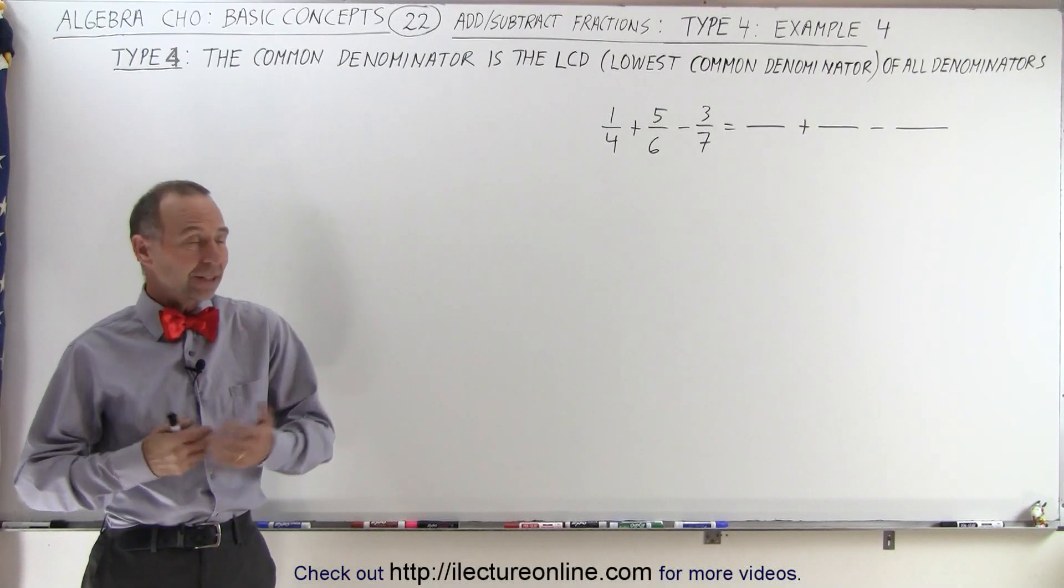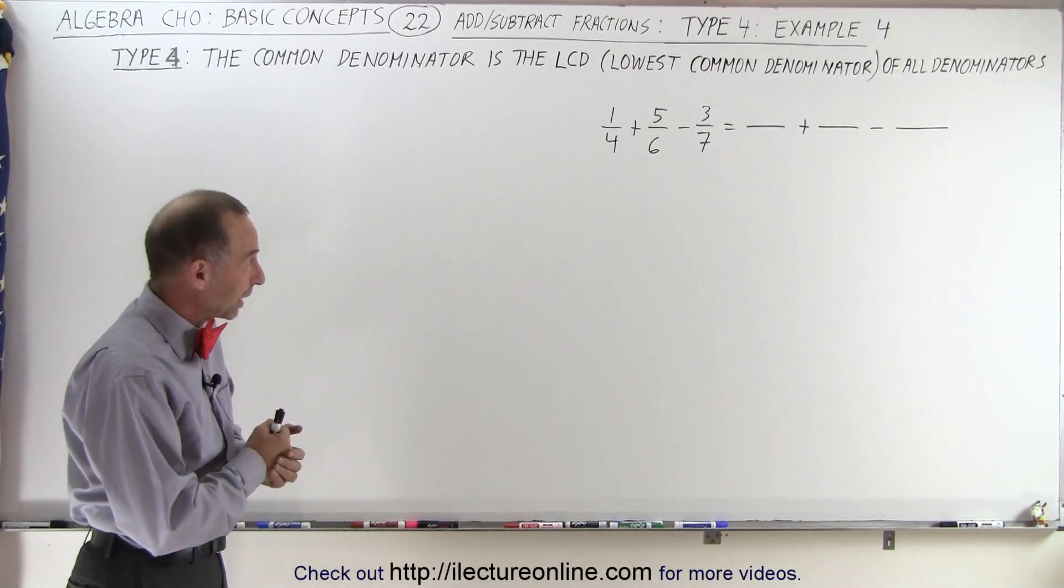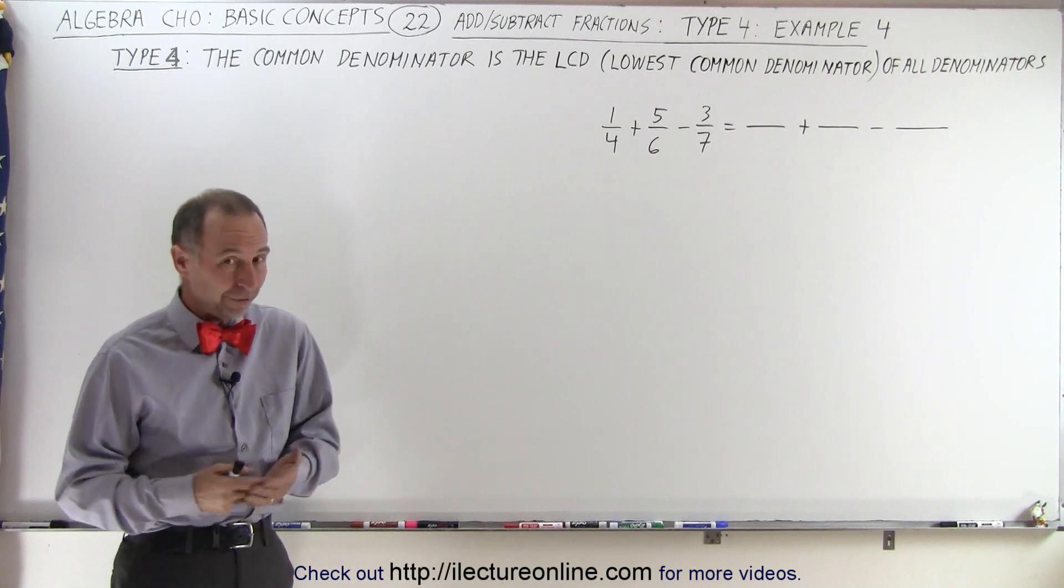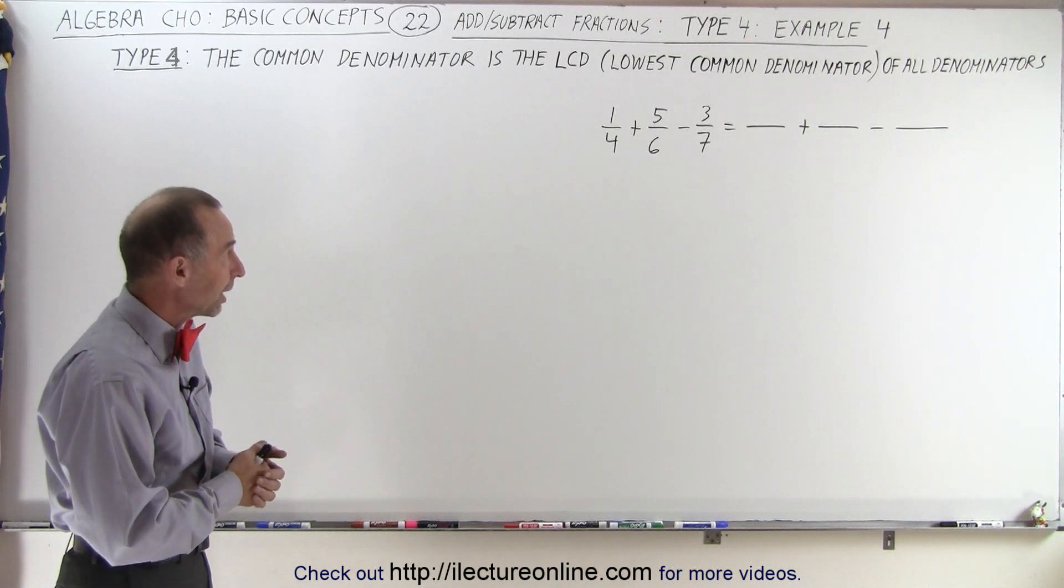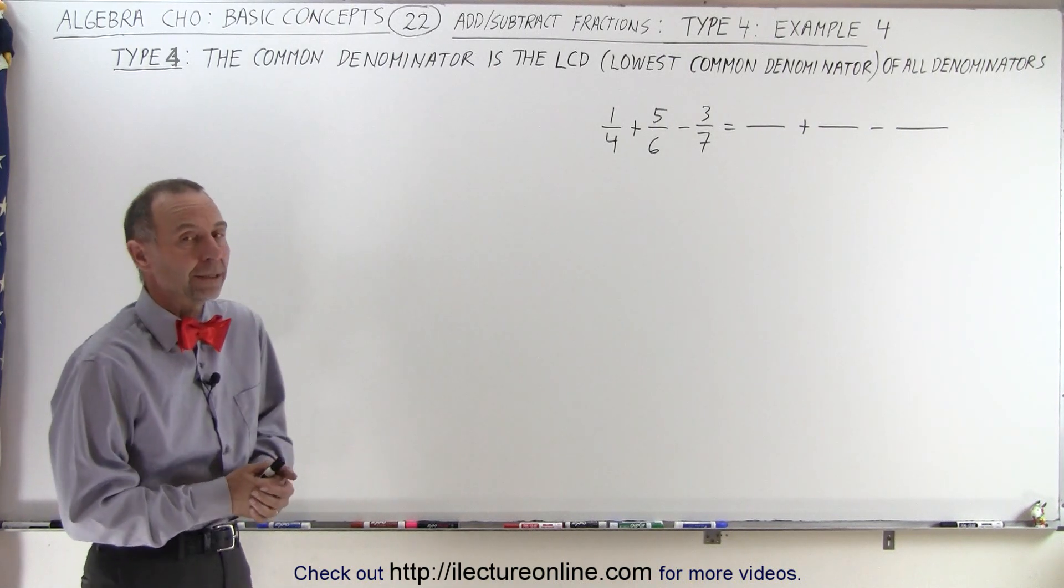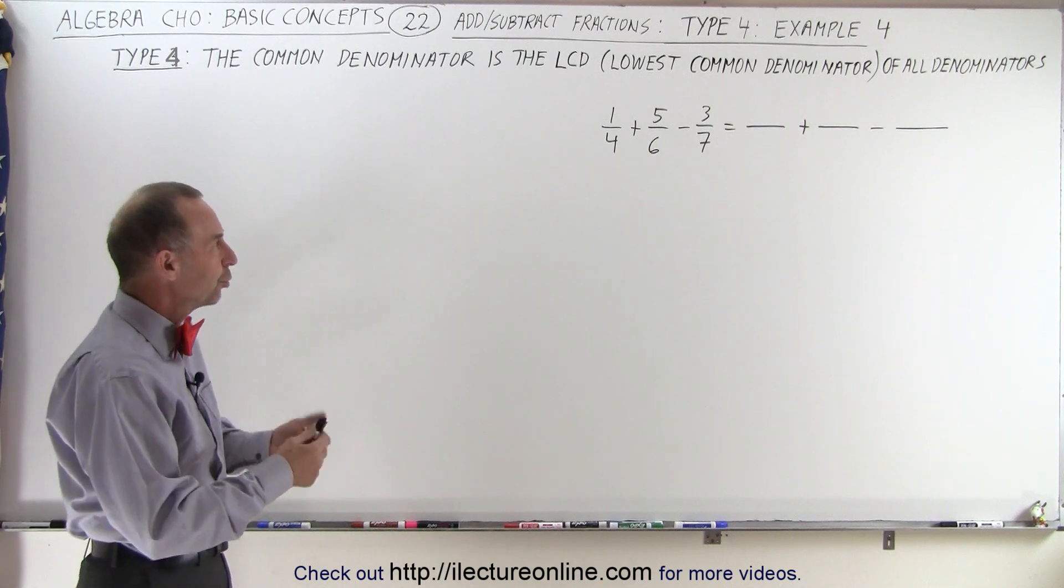Welcome to our lecture online. Our next example has a different set of denominators: 4, 6, and 7. They're very small. It wouldn't appear that it would be that hard to find the lowest common denominator. But let's again check our two different methods.